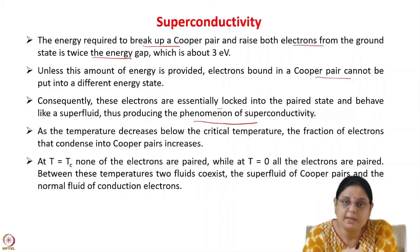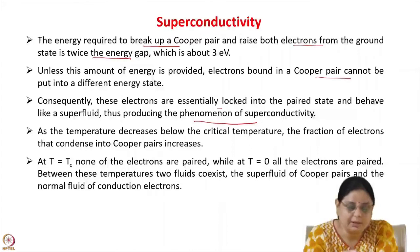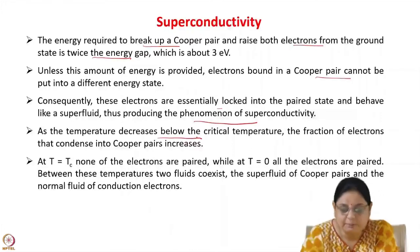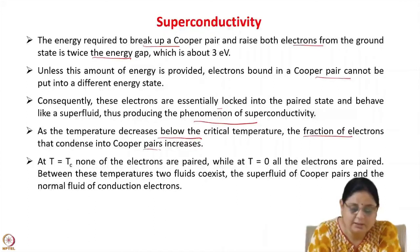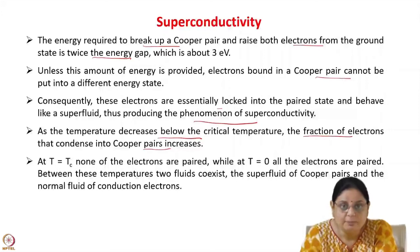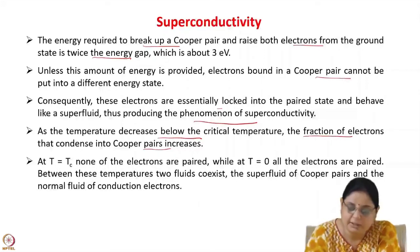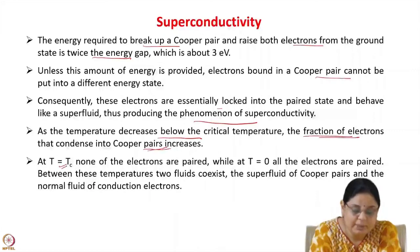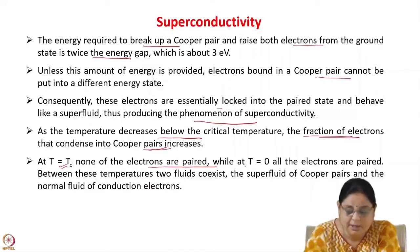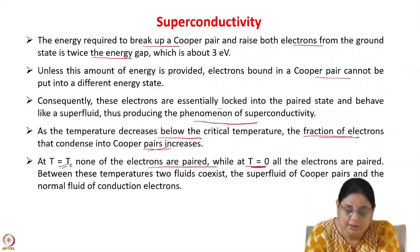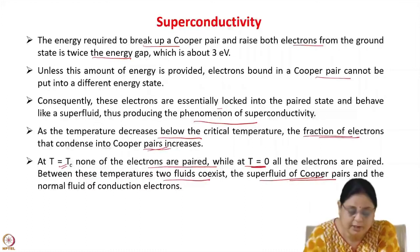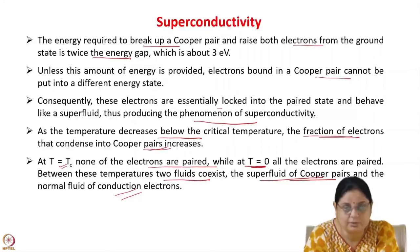These Cooper pairs are responsible for superconductivity below the critical temperature and critical magnetic field. As the temperature decreases below the critical temperature, the fraction of electrons that condense into Cooper pairs increases. At the critical temperature none of the electrons are paired, while at T = 0 all electrons are in the form of Cooper pairs. Between T = 0 and T = Tc, two fluids coexist: the superfluid of Cooper pairs and the normal fluid of conduction electrons.